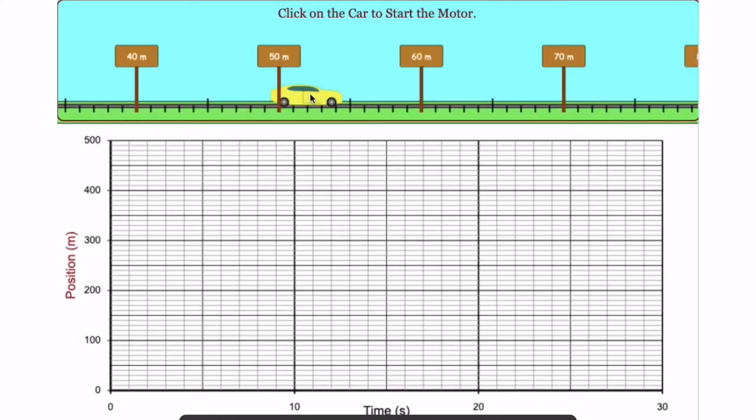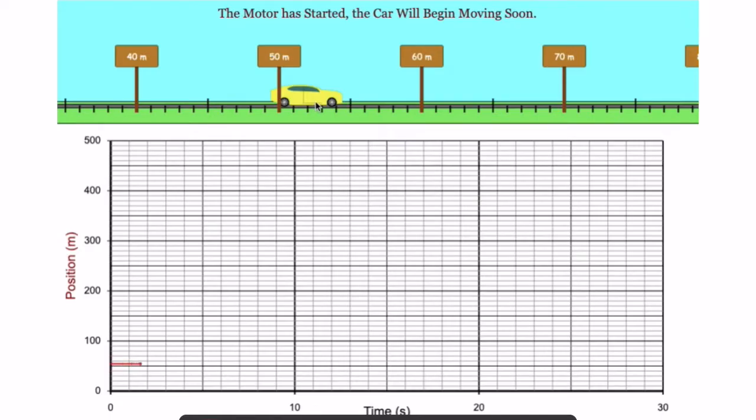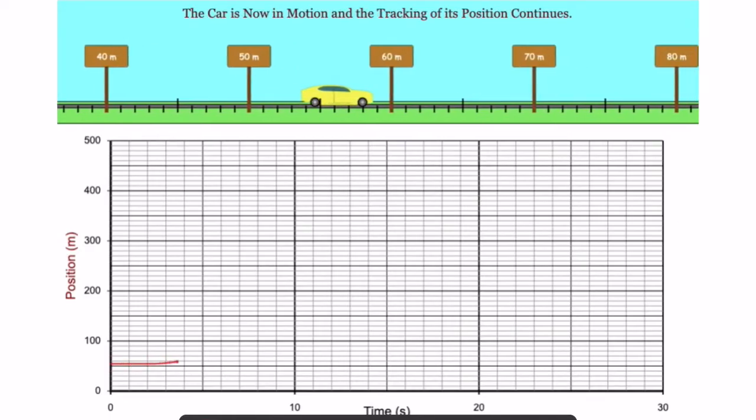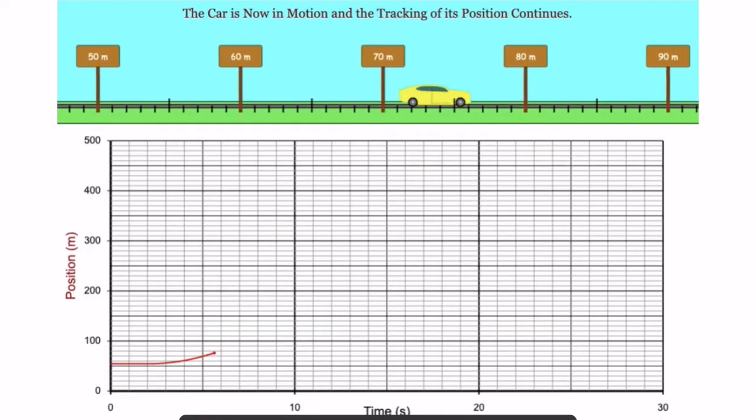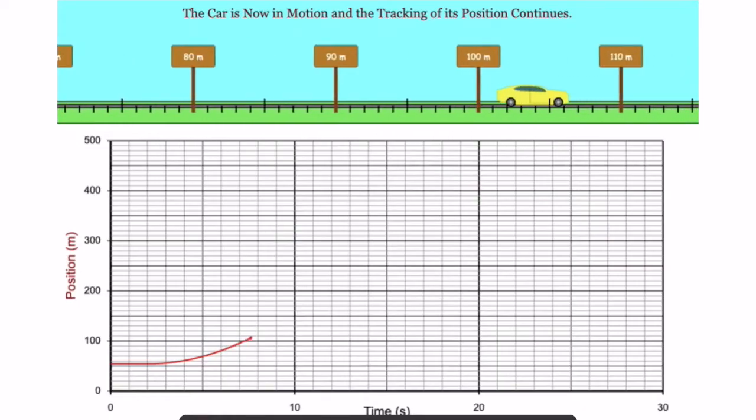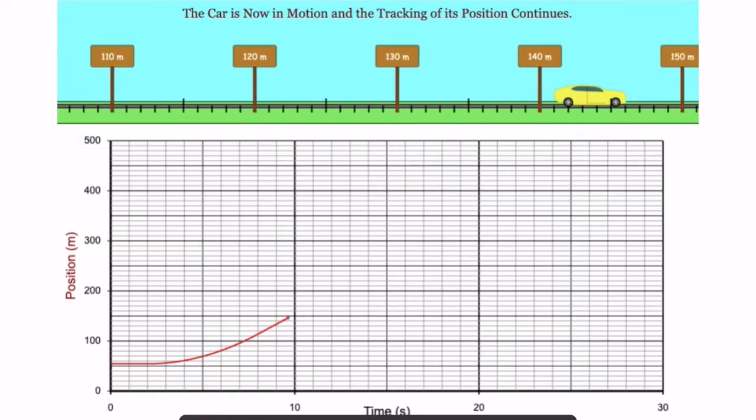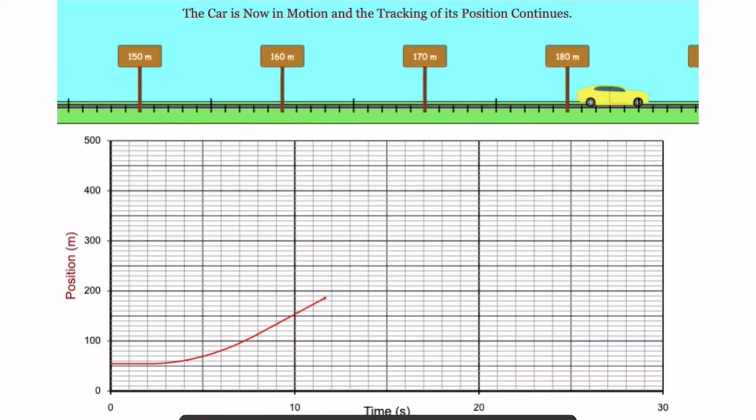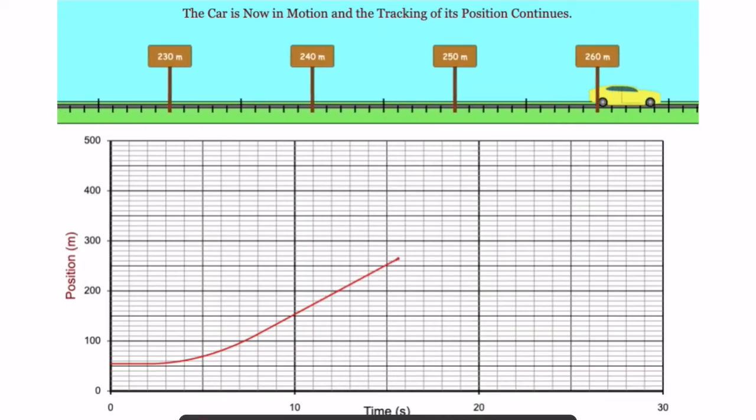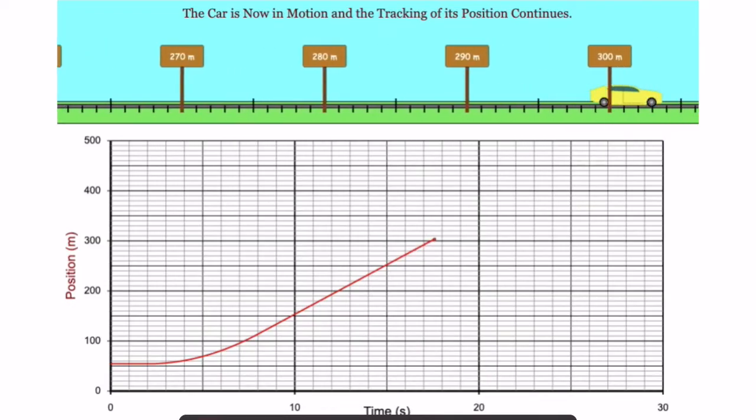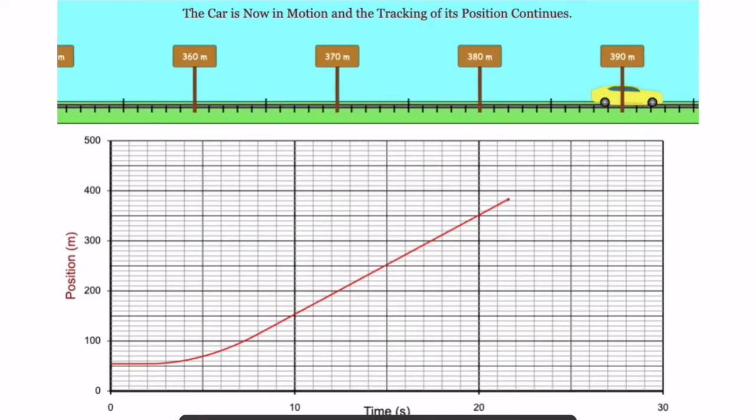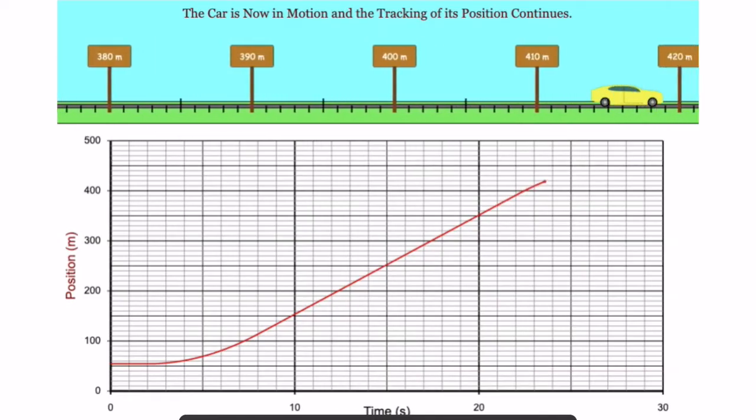This is what it would look like graphically. Starts at rest. Picks up speed. You could see it curving to steeper and steeper slopes. Constant speed. You could see the slope not changing. You could see it remains at constant speed for quite a while. It happens to be the maximum speed because it's the fastest it's going, the greatest slope.